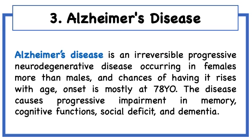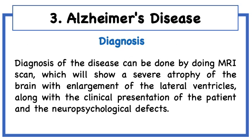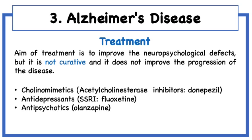Alzheimer's disease, which is also called senile dementia, causes many impairments of brain functions. Causes are not conclusive; however, it is clear that genetic factors are strongly contributive. Other factors include having low intellectual function or other diseases affecting the brain. Symptoms occur gradually with impairment in memory and cognitive functions. Diagnosis is by clinical presentation and MRI scan will show shrinkage of the brain. Unfortunately, treatment is not curative and does not improve the progression of the disease, but it only improves the neuropsychological deficits.